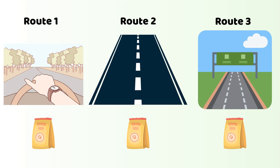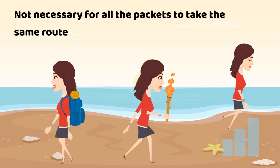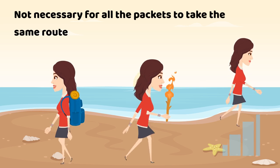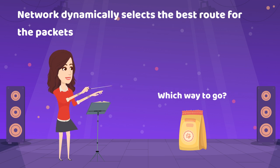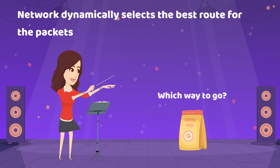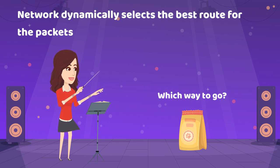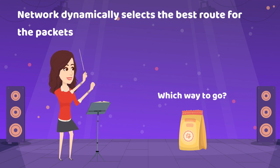Each packet travels to its destination through the best possible route, the one with the least resistance. It is not necessary for all the packets to take the same route. The network dynamically selects the best route for the packets and helps in balancing the load across various infrastructure of the network.